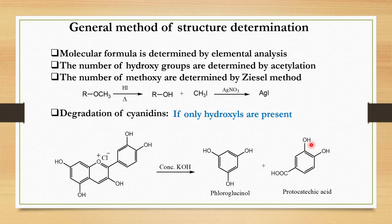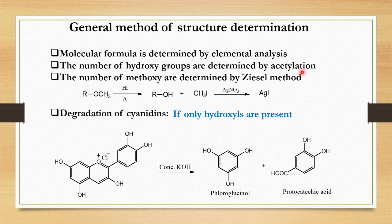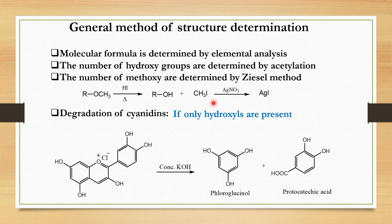Now let us discuss the general methods of structure determination of anthocyanins. The first step is the molecular formula, which we can determine by elemental analysis. In the second step, the number of hydroxy groups is determined by acetylation — the more acetylation, the more hydroxyls present in the structure. The number of methoxy groups is determined by the Zeisel's method, in which we heat the compound with hydroiodic acid and obtain alcohol and methyl iodide. When we treat this methyl iodide with silver nitrate solution, we get precipitates of silver iodide.